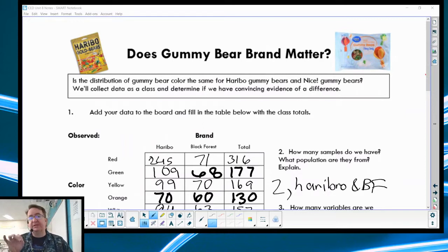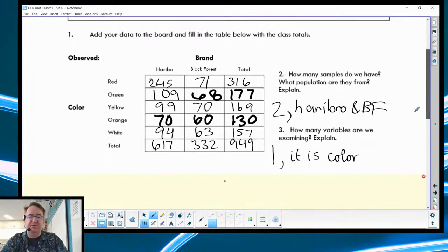Gummy bears. We're trying to decide if there's a difference in color distribution when we buy two different brands of gummy bears. Originally it says Haribo and Nice. I believe the original Stats Medic one used Myers ones from Michigan. I could not find any nice ones because I remembered this at the last minute. I ended up getting Haribo and Black Forest. Since we're back in school, I gave them to the students and they totaled them all up.